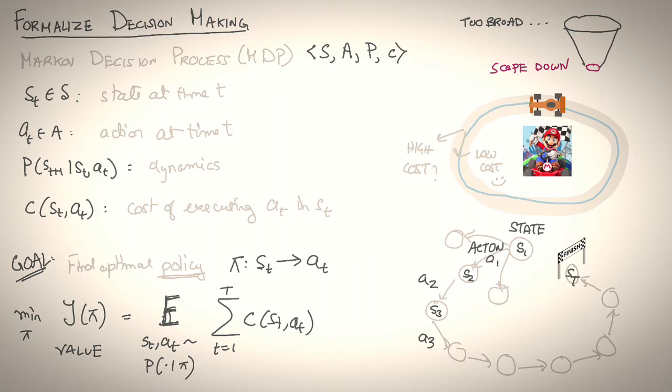In other words, it's asking us to find a policy pi such that if we were to drive with that policy, we would create trajectories that are low cost, for example, have really low lap times, or don't go off the track, and so on. Now, all this is well and good, but I've sneaked in an assumption that makes this problem hard to solve. Can you detect what that is?